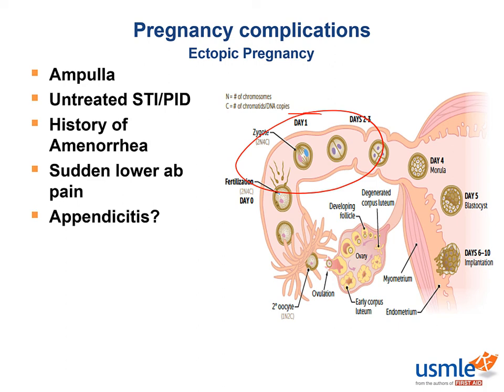If you suspect ectopic pregnancy, the first test to order is a pregnancy test. If the egg has not implanted in the uterus, you don't have a functional placenta secreting HCG, so you will see HCG levels that are lower than expected based on the pregnancy date. A positive HCG helps differentiate this from something like appendicitis, and of course this needs to be confirmed with an ultrasound.